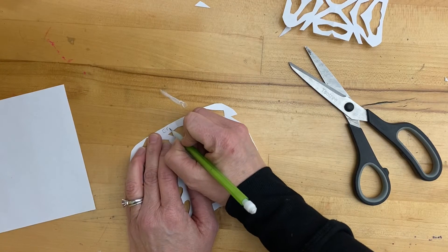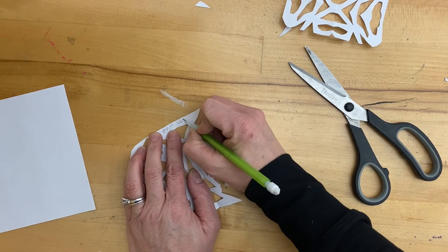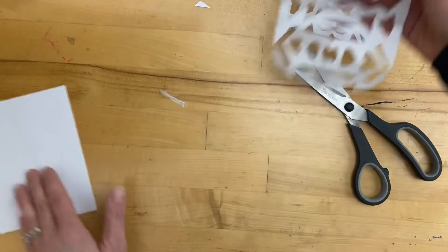So again put your name and room number on there and then put that in your folder so you don't lose that, and then you can make your third one.